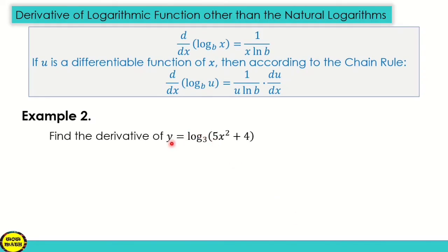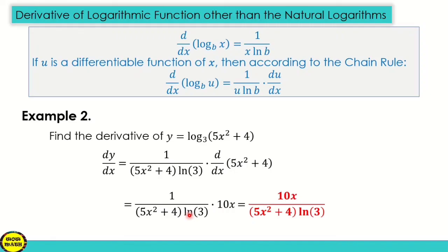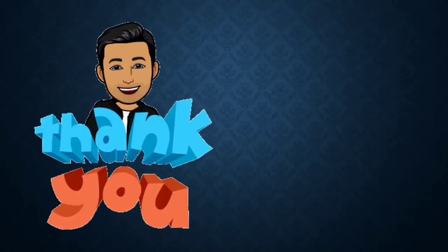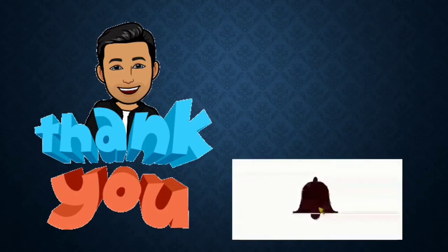Another example: find the derivative of y is equal to log base 3 of the quantity (5x squared plus 4). Our u is 5x squared plus 4. Following the formula: 1 over (5x squared plus 4) times ln 3, times the derivative of (5x squared plus 4), which is 10x. The final answer is 10x over (5x squared plus 4) ln 3. This is your WowMath channel, your guide in learning your math lessons.